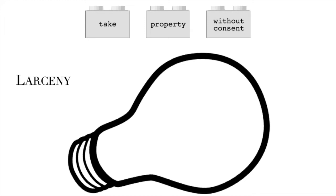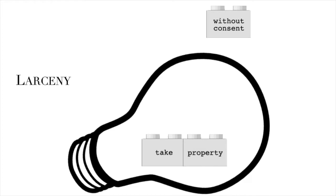Culpability is clearly required to be shown as to the conduct element of taking. For example, if someone leaves your book bag in your car and you drive off with it, you have taken the bag but not culpably, if you did not know the bag was in your car. Likewise, culpability has to be shown as to the 'property of another' element — if you own a black book bag and pick up my black book bag by mistake, you cannot be convicted of larceny. The appellate court in reversing Kelly's conviction saw no difference for the 'without consent' element.